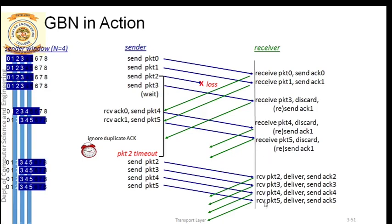Similarly here, packets 2, 3, 4 and 5 are all correctly received at the receiver. So instead of sending acknowledgements for all four packets, the receiver can send one cumulative acknowledgement for packet 5. ACK 5 only can be sent, which indicates ACK 2, ACK 3, ACK 4, and ACK 5 - all four packets are correctly received. So only ACK 5 will do at the sender side.